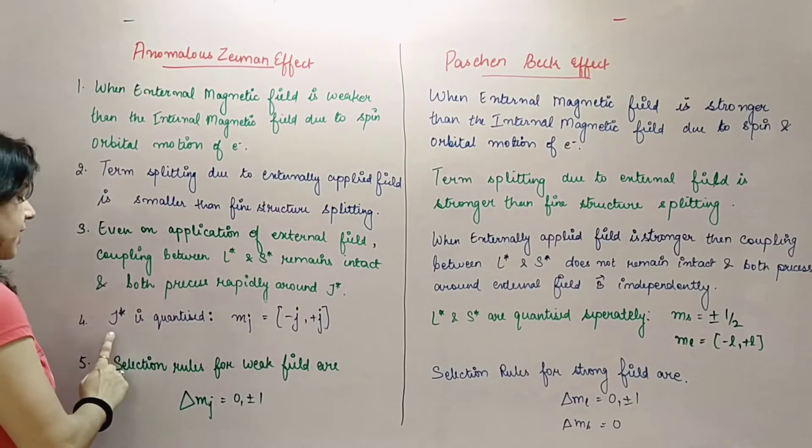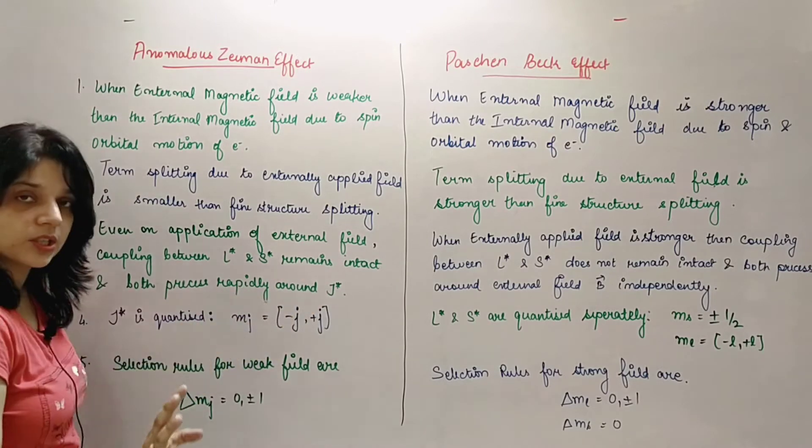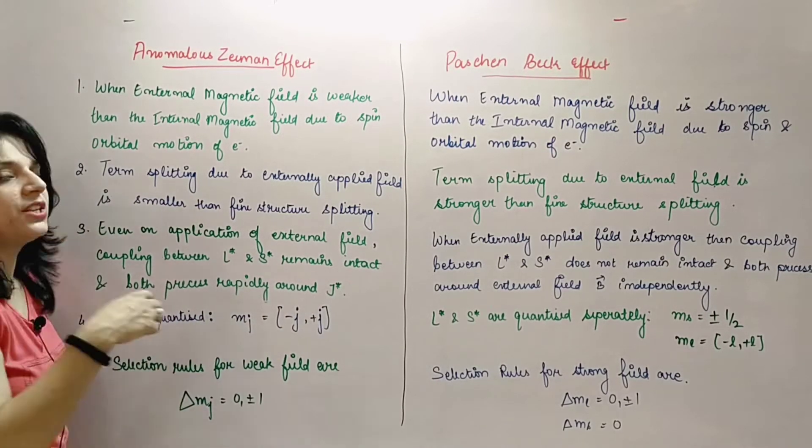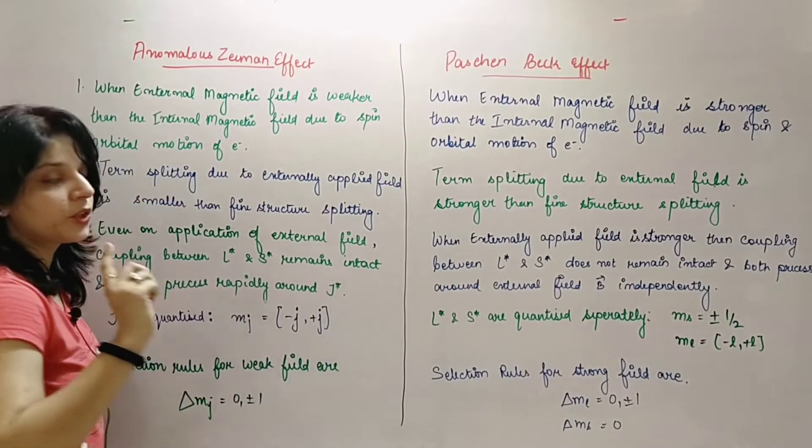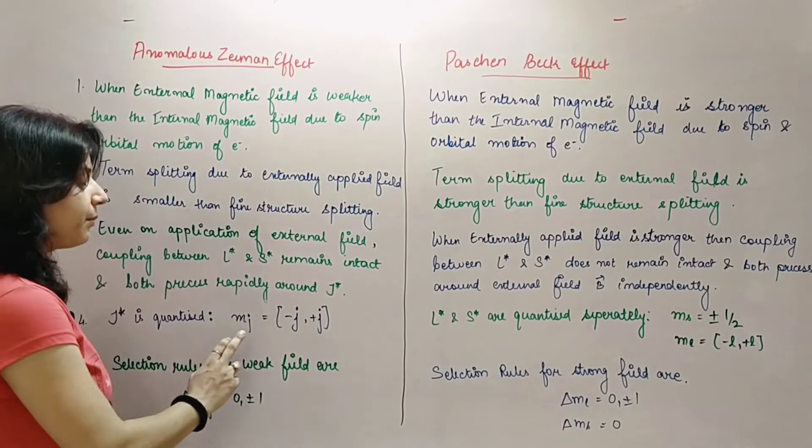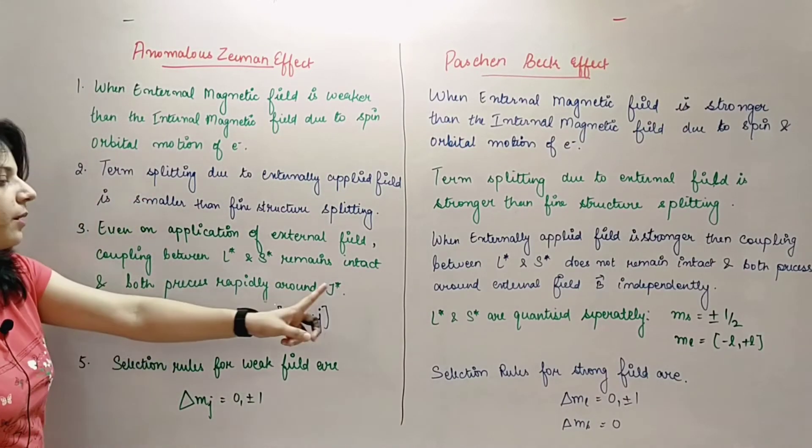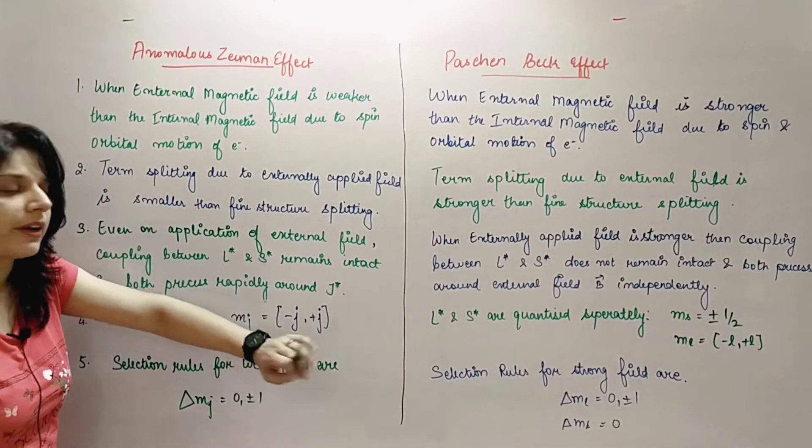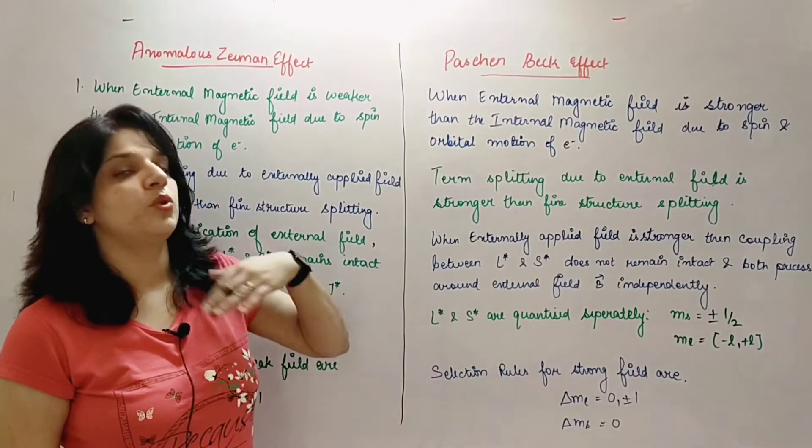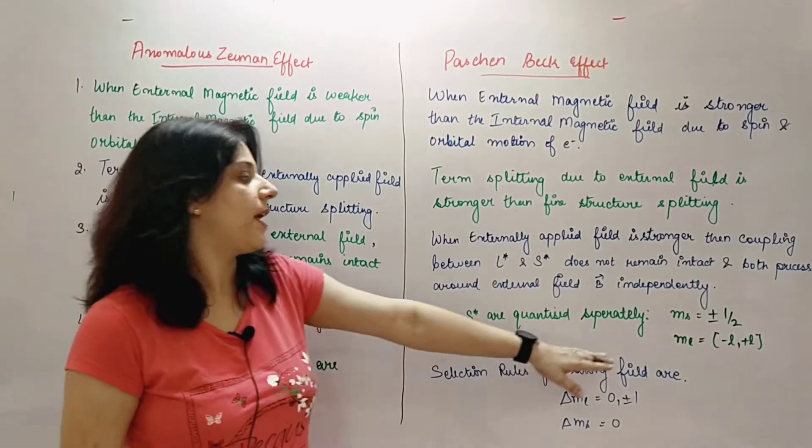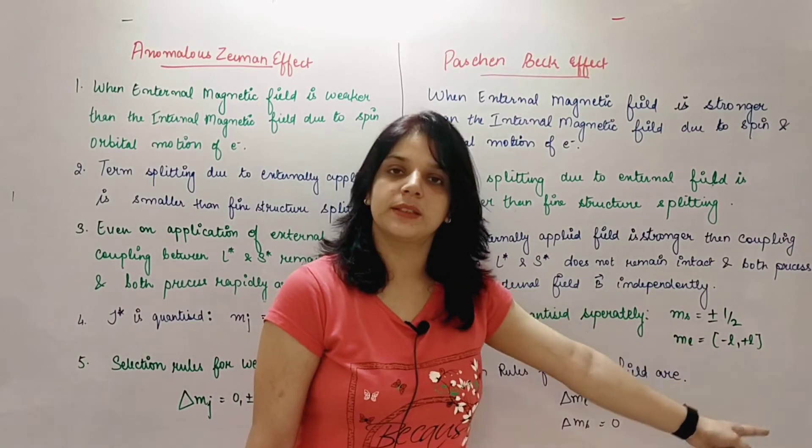In this case we'll say J exists due to coupling of L and S, so we'll say J is quantized. It will separately quantize both of them on its own, so we'll say mj together in coupling, mj value will come from minus j to plus j. Why? Because coupling is intact and our resultant is around J vector. In this case, L and S coupling has broken, so we'll say L and S both are separately independently quantized. ms value plus minus half due to spin, while orbital is minus L to plus L.